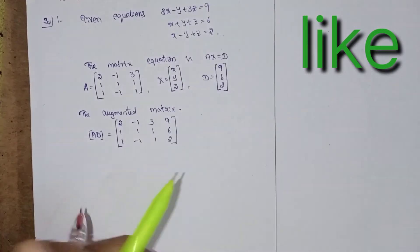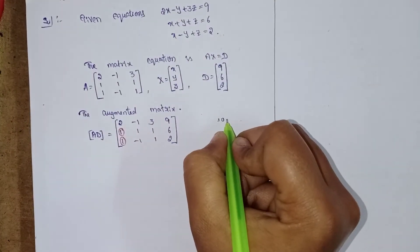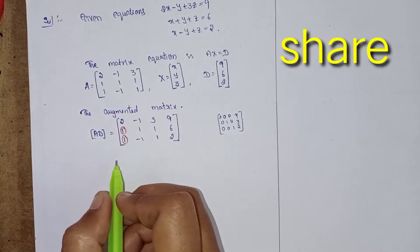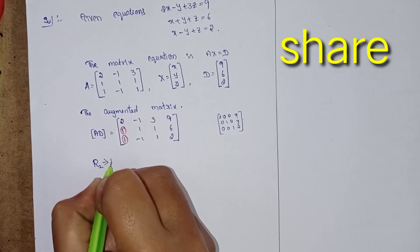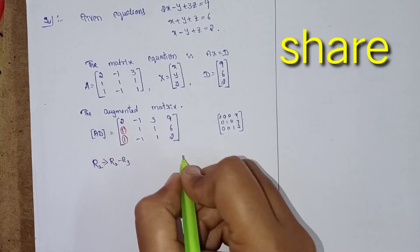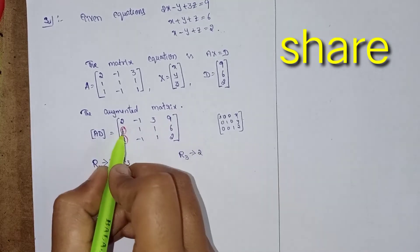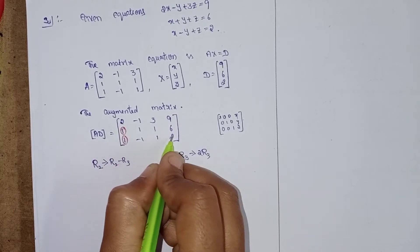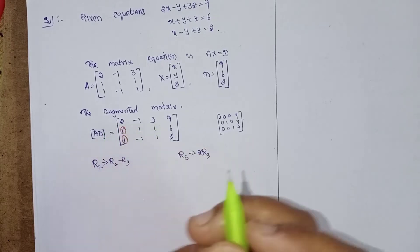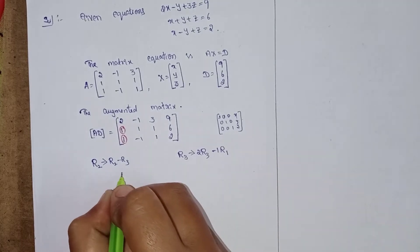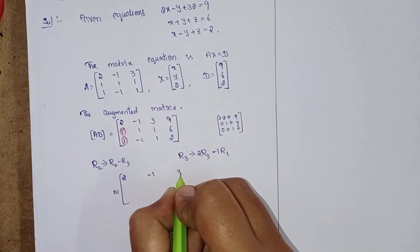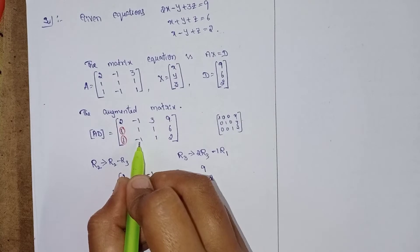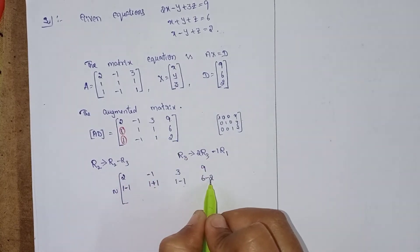Next, convert the first elements of R2 and R3 into zeros, because we want the form [1 0 0 / 0 1 0 / 0 0 1] for x, y, z. The operations are: in R2, R2 minus R3. In R3, 2 times of R3 minus 1 time of R1. We didn't disturb R1 — it stays as it is.